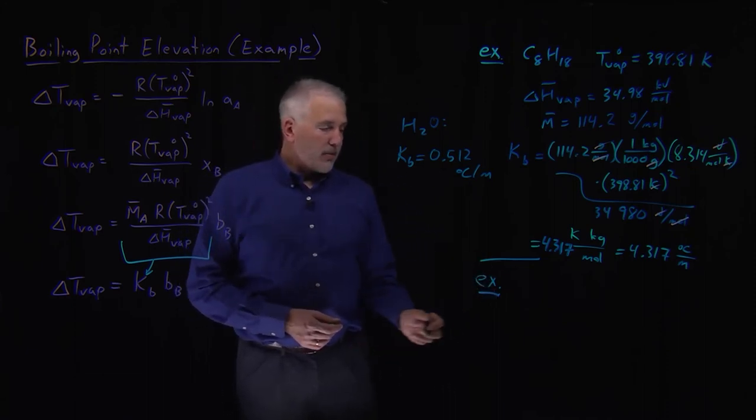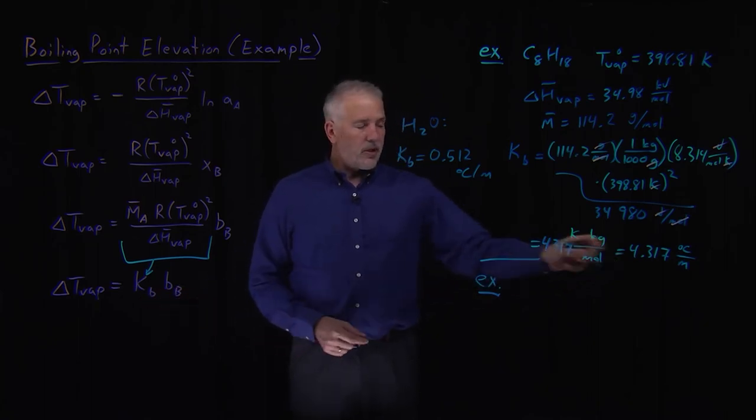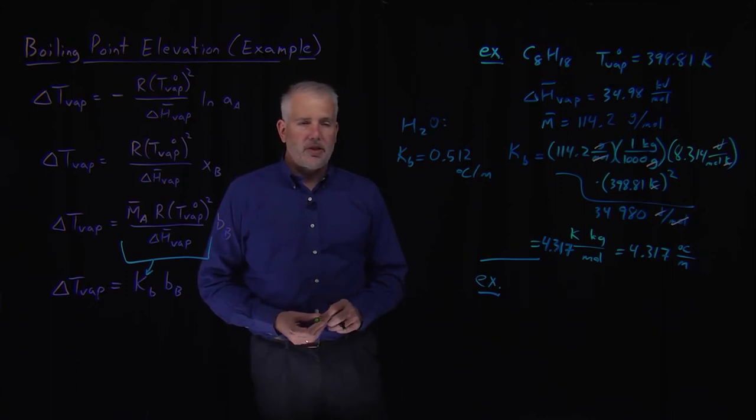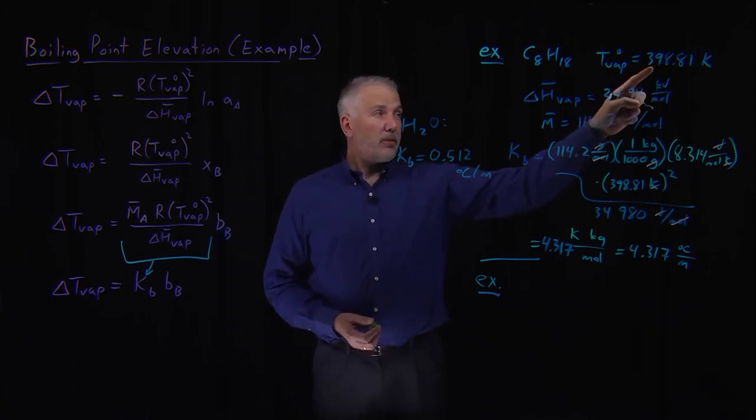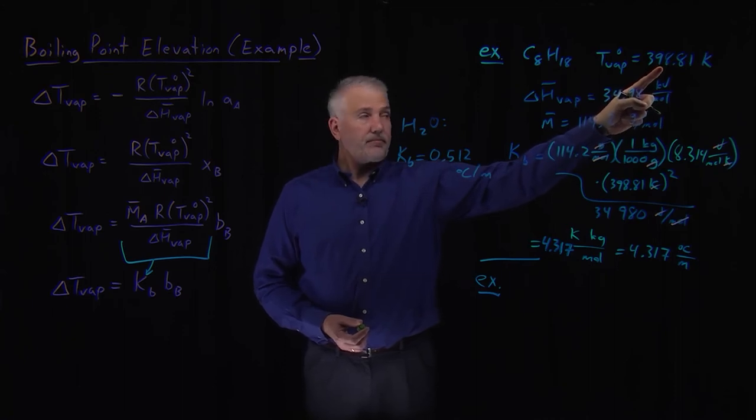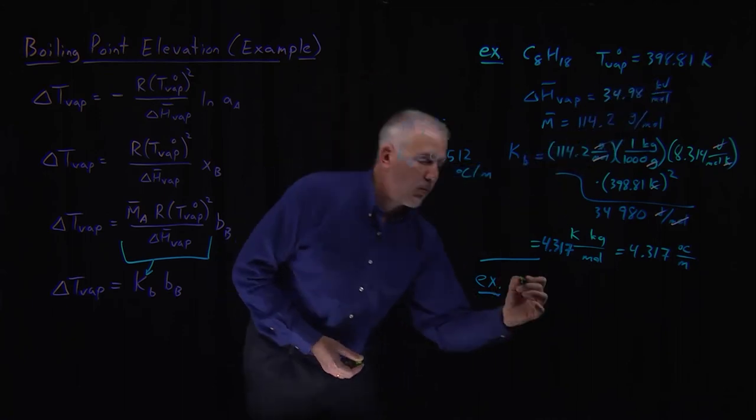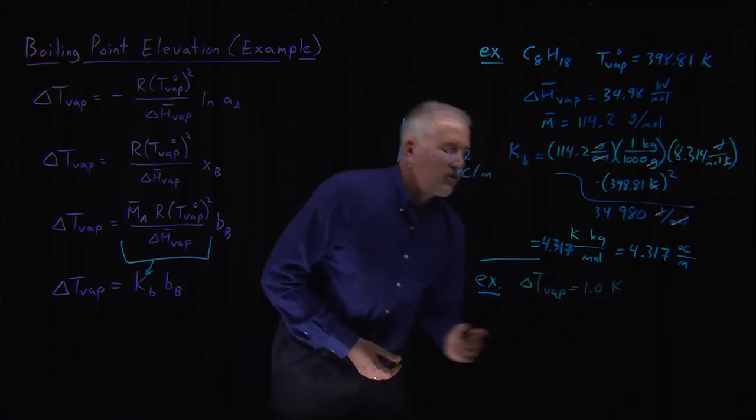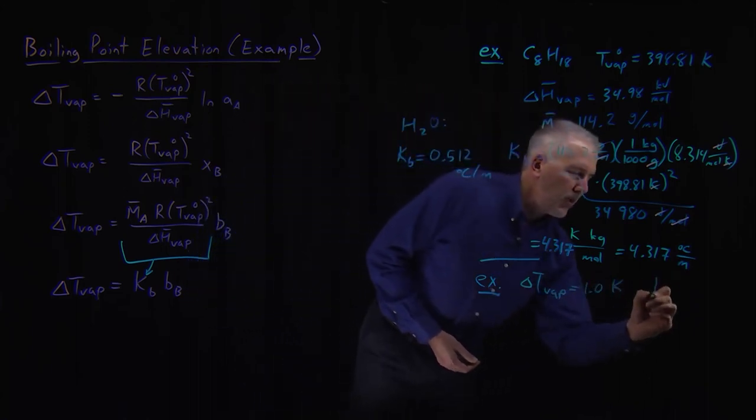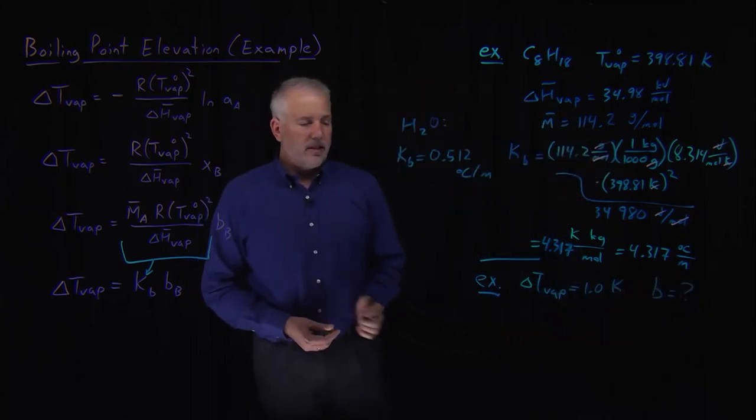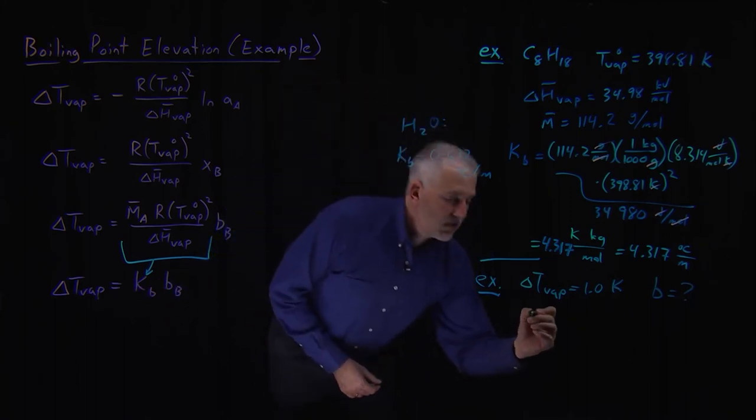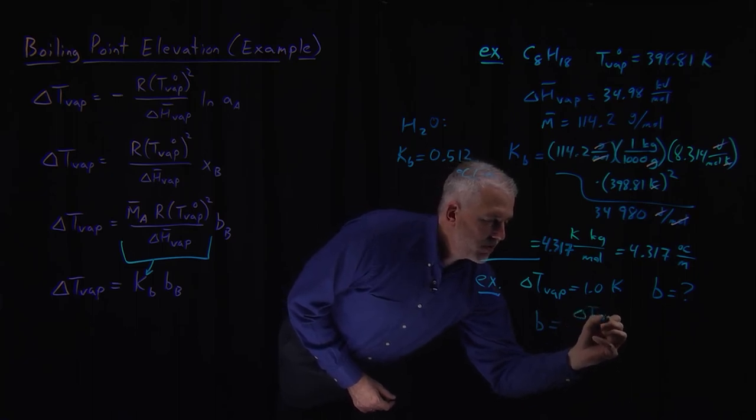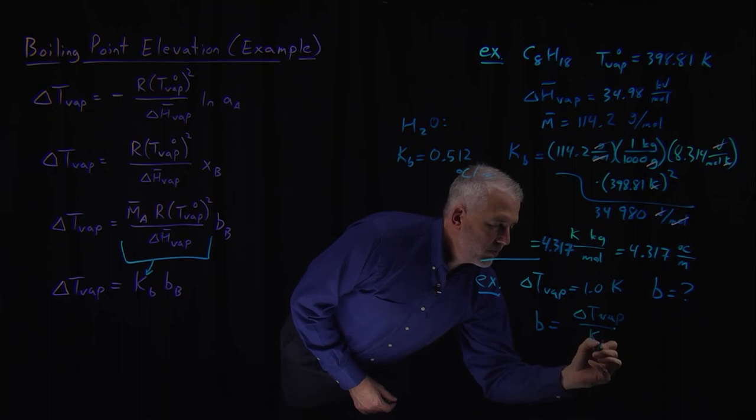So if we do want to do an example, instead of giving you a molality and multiplying these two numbers to find the boiling point elevation, let's do a slightly different flavor of example. Let's say I want you to prepare a solution that has a boiling point not of 398.81, but let's say 399.81. Let's say I want the boiling point to be elevated by one degree Celsius, one Kelvin. What concentration of solution would you prepare? That's almost as easy. The molality would be the change in the temperature, the boiling point divided by the boiling point elevation constant.